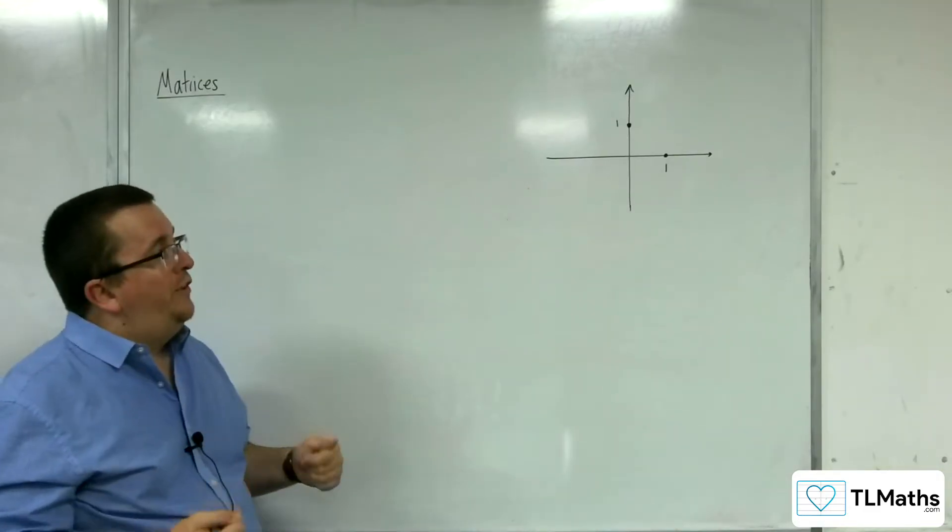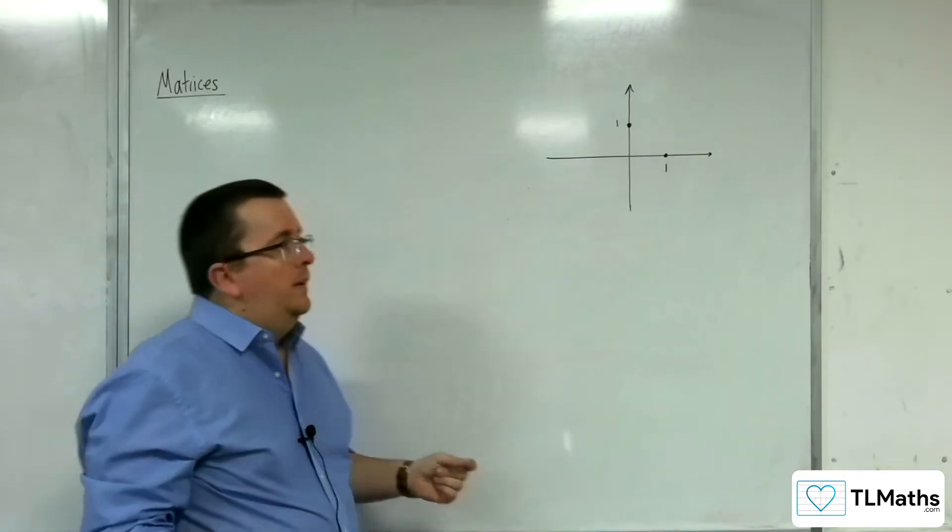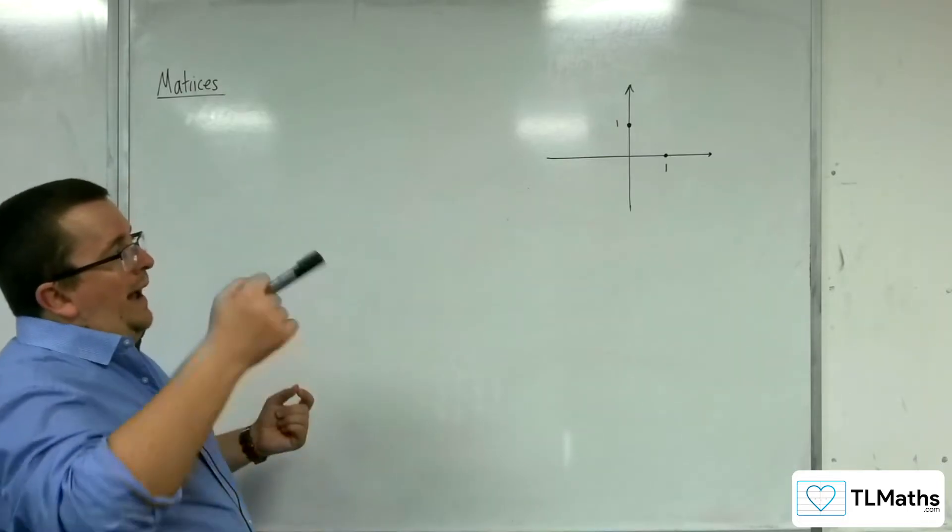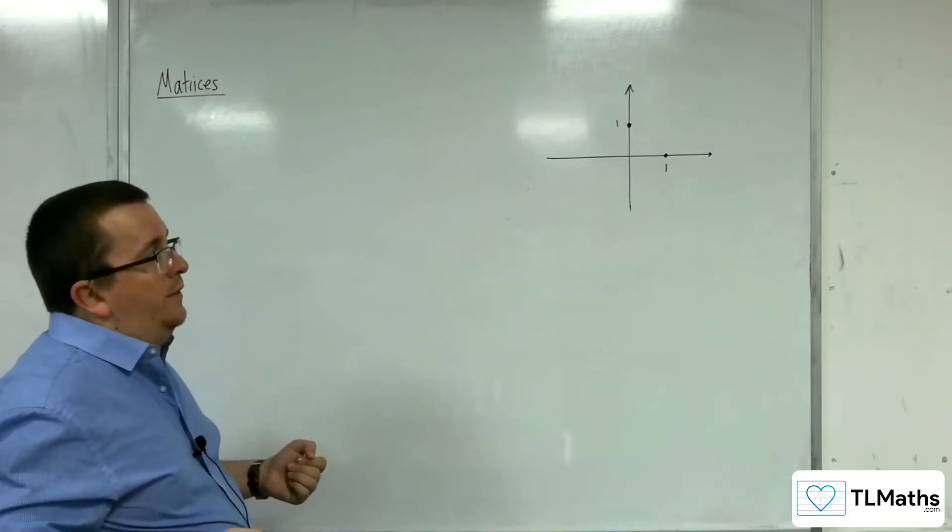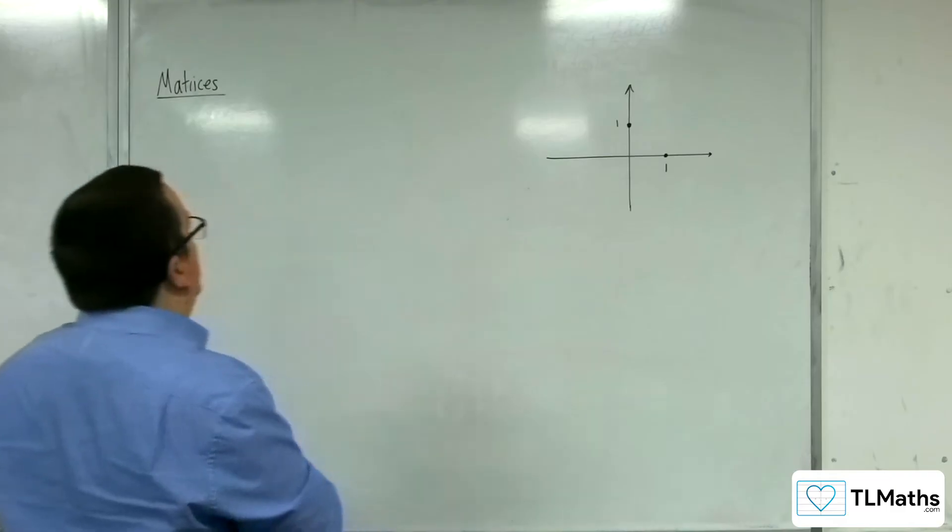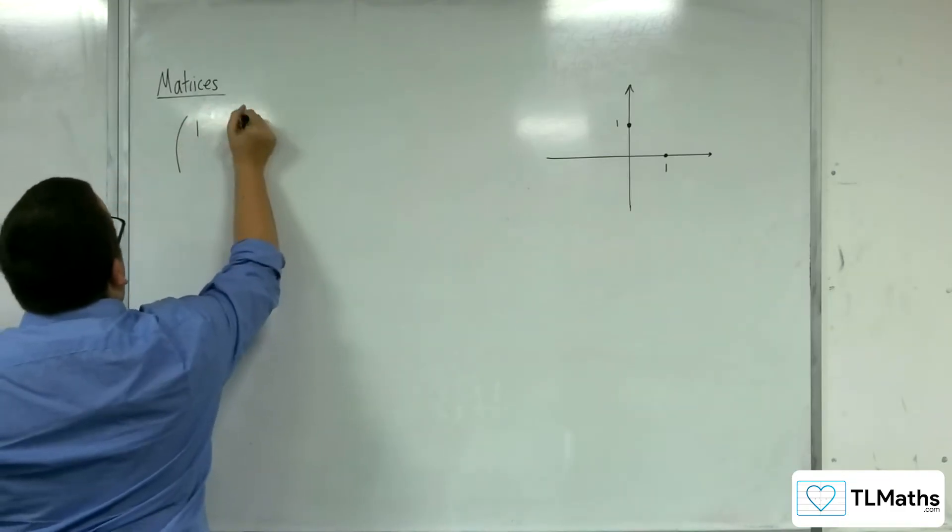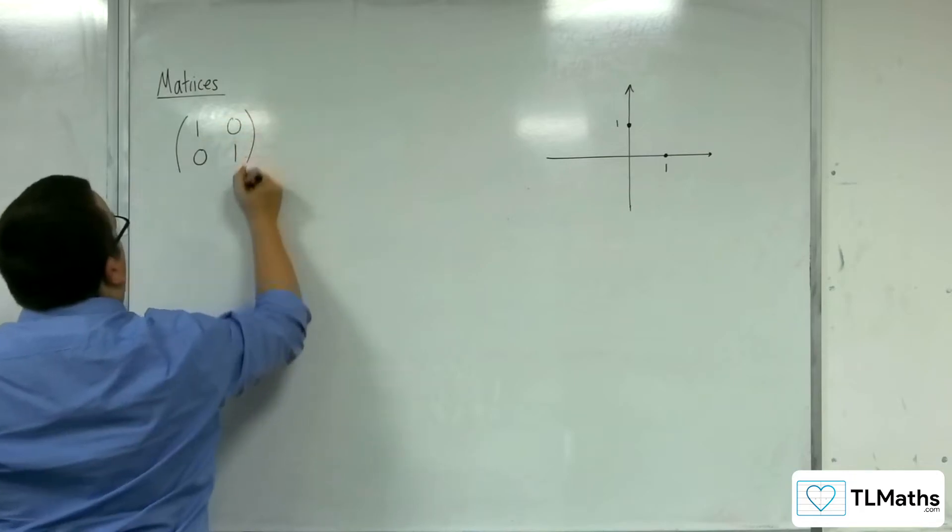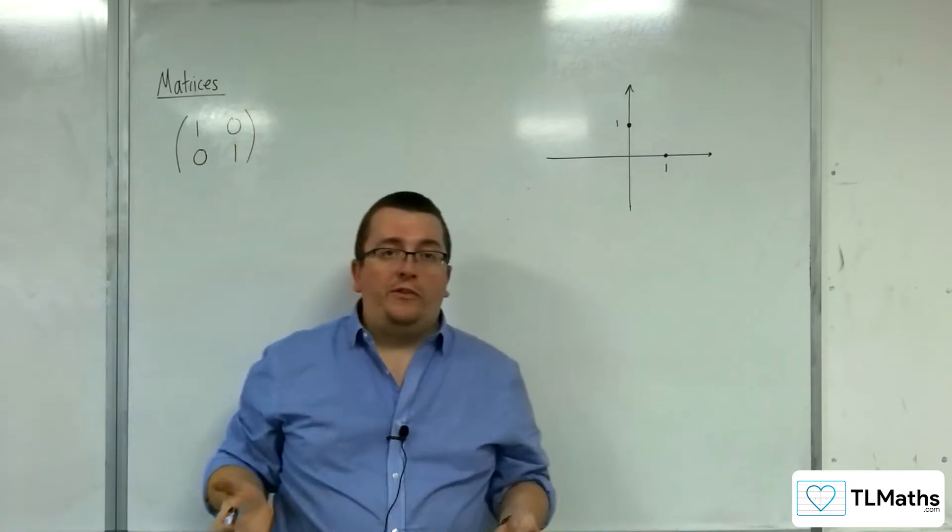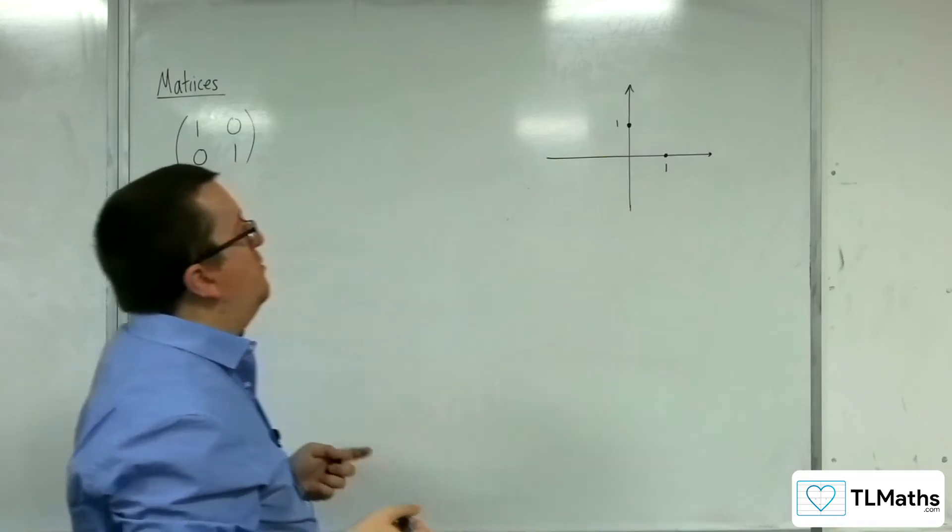So I've labelled the points 1, 0 and 0, 1. And we're just going to think about how we could rotate these points around. Because we know that if we're just going to remain static and not change anything, then our matrix is the identity matrix, 1, 0, 0, 1. These points will remain where they are.